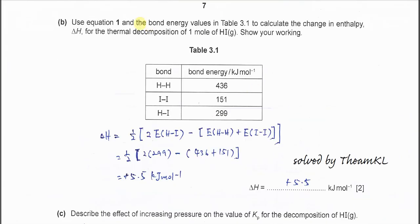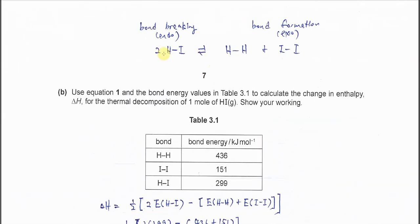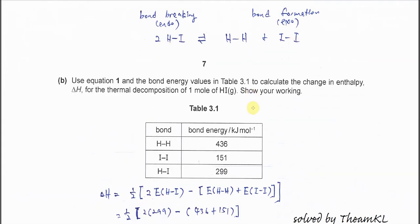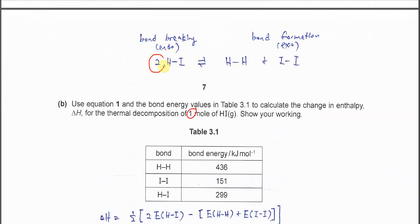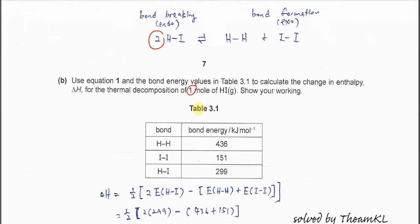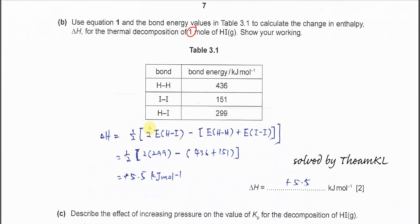For part B, use equation 1 - 2HI decomposes to form H2 and I2. The bond energy values are given in this table. Calculate the change in enthalpy for decomposition of one mole. Very important - in equation 1, it's actually 2 moles, so you have to half it because it's decomposition of one mole.